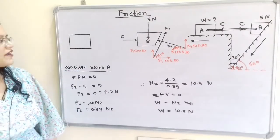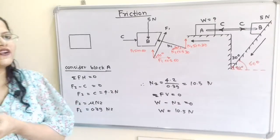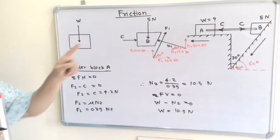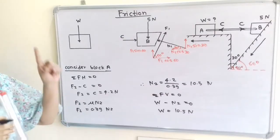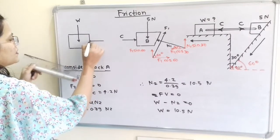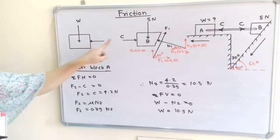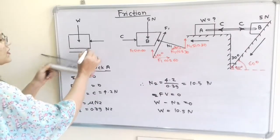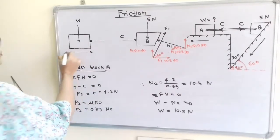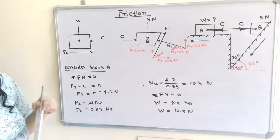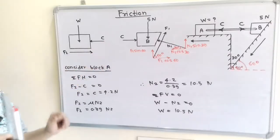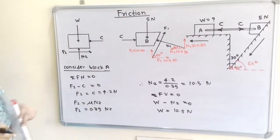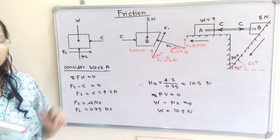Now we will draw the free body diagram for block A. The weight W, which we have to find, acts vertically downward through the center. There is force C applied by the bar on block A — direction is opposite but magnitude is same. The motion of block A is towards the left, so we show frictional force F2 in the opposite direction. The normal reaction N2 is perpendicular to the fixed surface, that is in the vertical direction through the center. All forces are in horizontal and vertical direction, so no need to resolve any force.